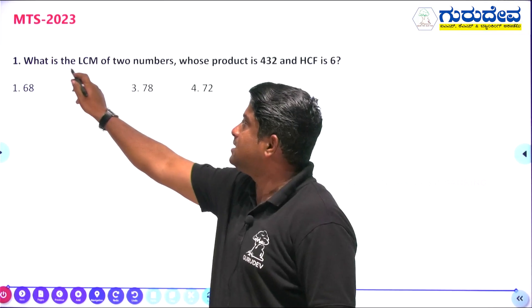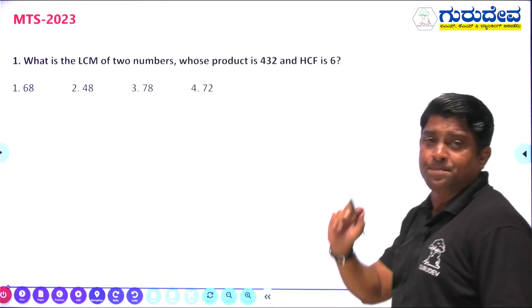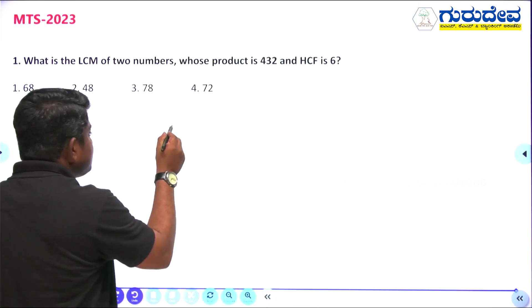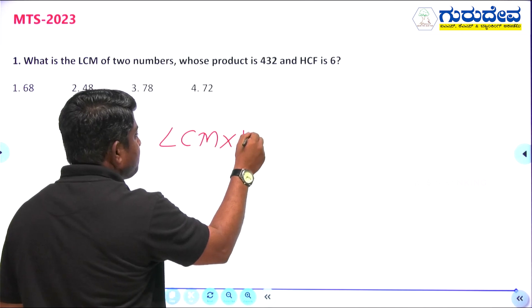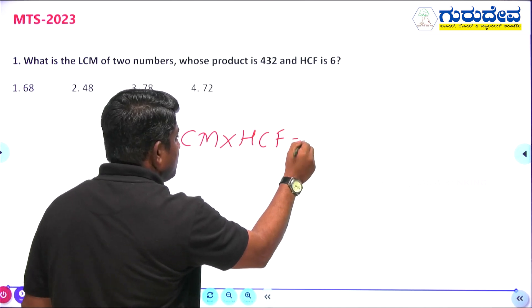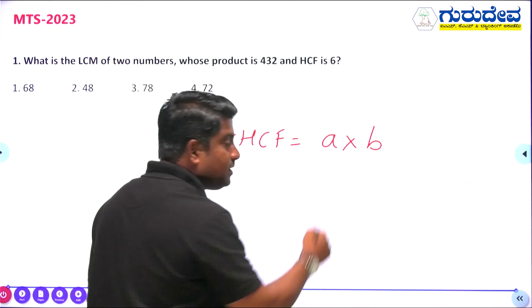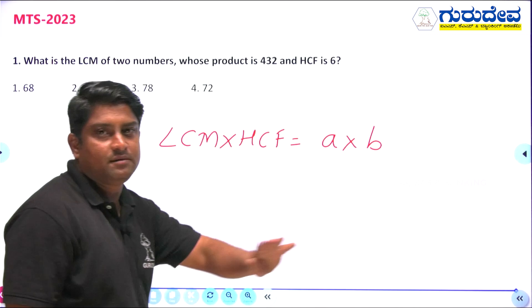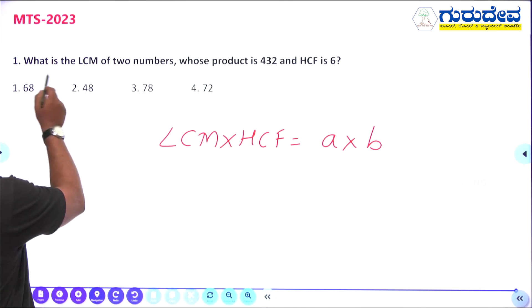The first question: what is the LCM of two numbers whose product is 432 and HCF is 6? We have a small formula: LCM × HCF = A × B, where A and B are the two numbers. LCM × HCF will be equal to the product of the two numbers.